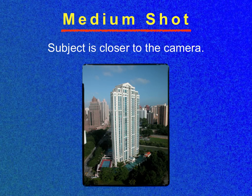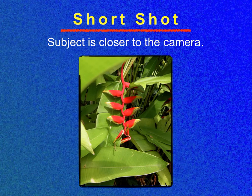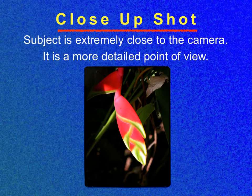A medium shot is where the subject is closer to the camera — it's not rocket science. Photography is very logical and common sense. A short shot is closer than the medium but further away than the close-up. The close-up is very close, but that's not macro photography. Macro is getting in almost microscopically — you would see every little hair of the plant. The subject is really close and it's a more detailed viewpoint.